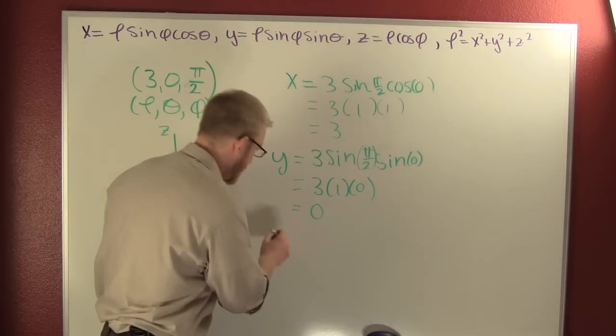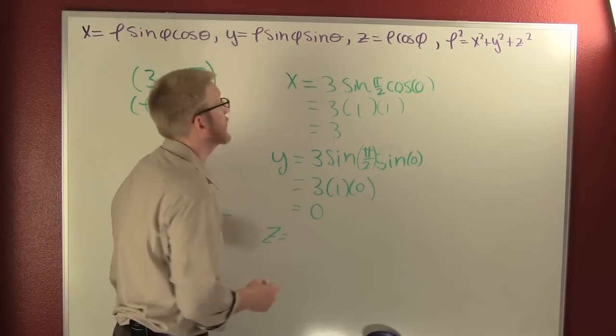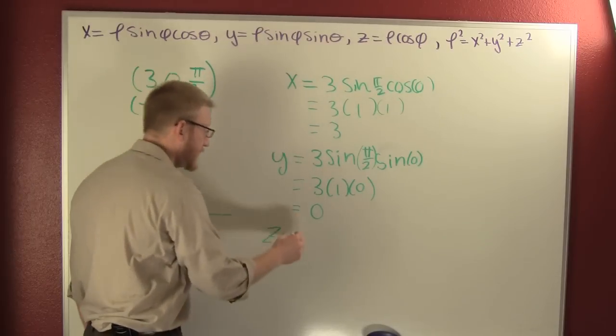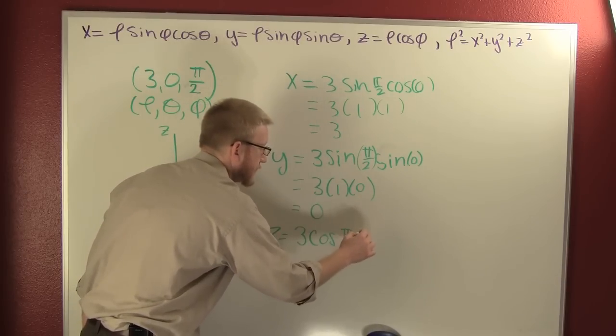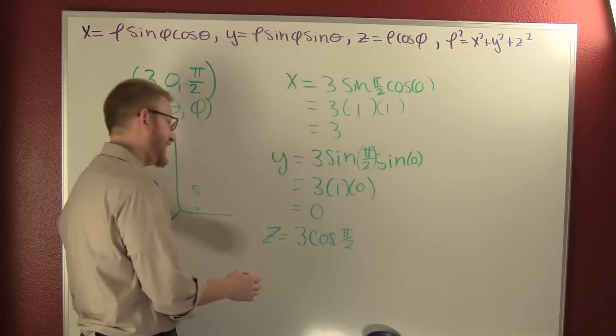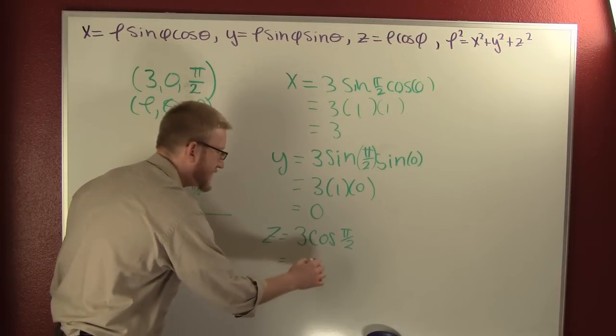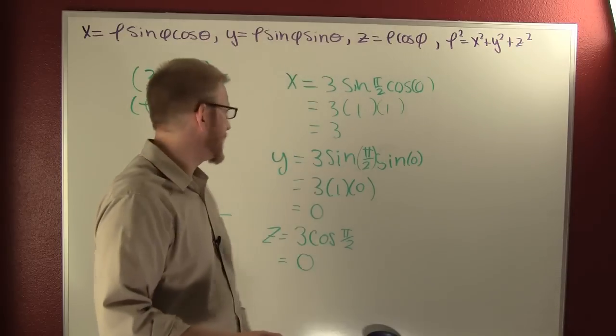Let's find z. Z is gonna be rho, or 3, cosine phi. Cosine pi over 2, that thing's 0 again, and the whole thing is 0.